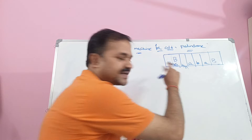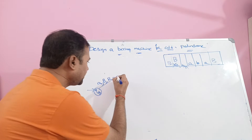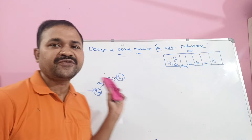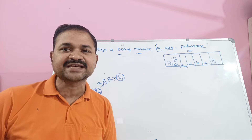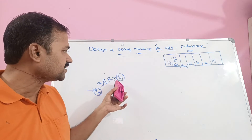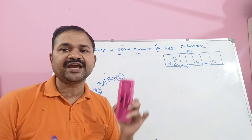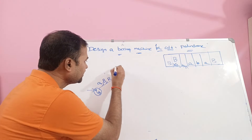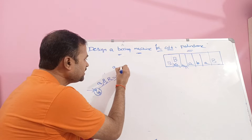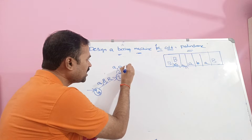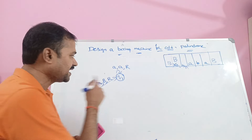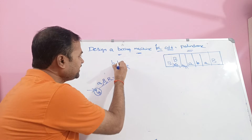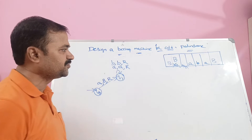Now we are at a new position and the state is Q1. If we apply any number of A's and B's on Q1, then we don't change A and B — keep them as they are — but move the head towards the right. So if we apply A on Q1, keep it the same but move the head right. Likewise, if we apply B on Q1, keep B the same but move the head right.